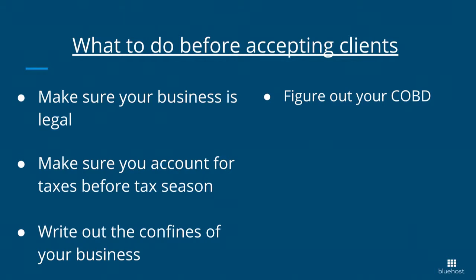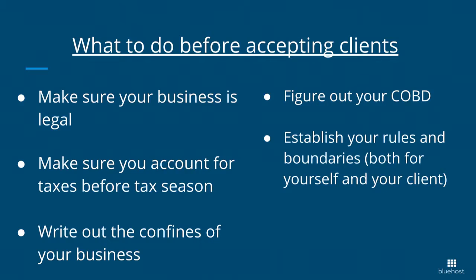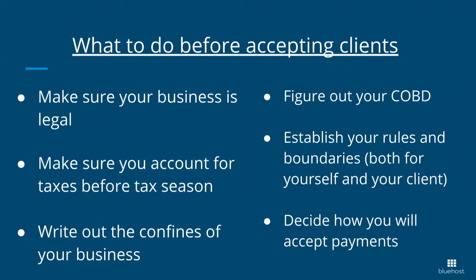Next, figure out your COBD — that's your cost of doing business. That means how do you make sure that you're actually making more money than you were when working a previous job. Establish your rules and your boundaries — both for you and for your clients. It could be something as simple as I only take calls after 9 a.m. and until 6 p.m. Write them out early and you'll save yourself a lot of headaches. The last one is decide how you want to accept payments and decide how much you want to be paid, which is part of figuring out your cost of doing business.